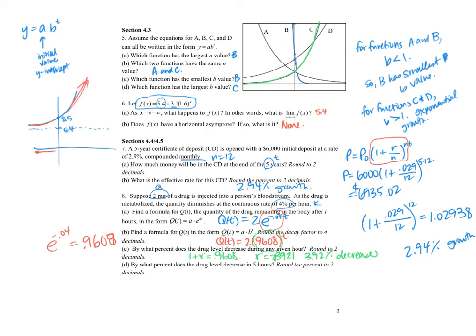And then by what percent does it decrease in 5 hours? I want to do 0.9608 to the 5th, and then I want to subtract 1 from that. 0.81877, so we can do 1 minus that, and I get negative 0.181, so it decreases by 18.1%.